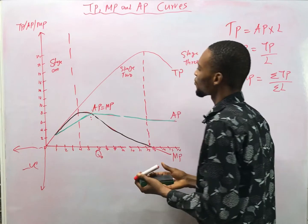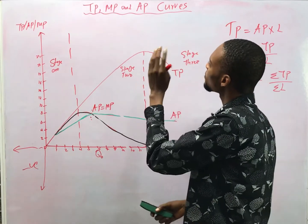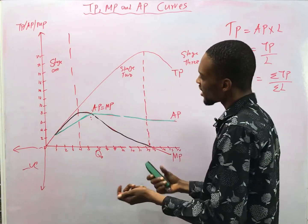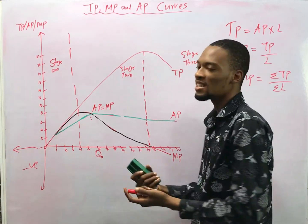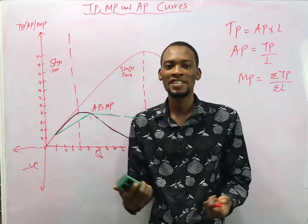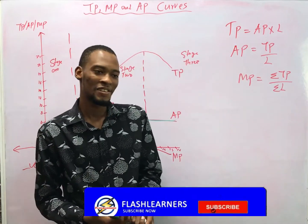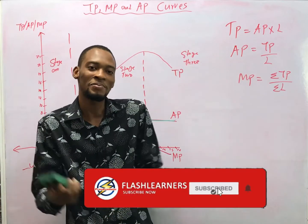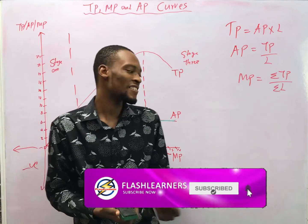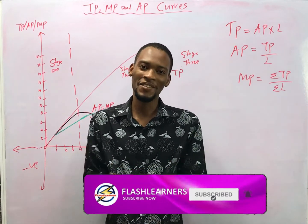So this is the graph of total products, marginal products, and average products, and that is the interpretation of the graph. Hope you liked the tutorial — why not subscribe to this channel to get more tutorials like this? Thank you.